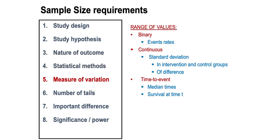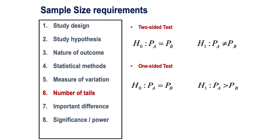The next thing required is the measure of variation. For a binary outcome, the measure of variation is just the event rates, primarily from the control group. For a continuous outcome, you need the standard deviation of the variation of the mean — you need this in the control group and perhaps the intervention group as well. For time to event, it's either the median survival time or the survival time at time t. The next step is whether you're going to do a one- or two-sided test. The two-sided test assumes the null hypothesis is that the groups are equal and the alternative hypothesis is that the groups are not equal. In a one-sided test, you're just looking to see that the new intervention is better than the control.